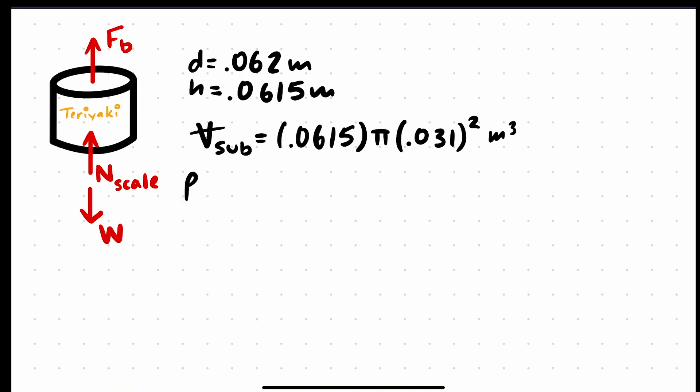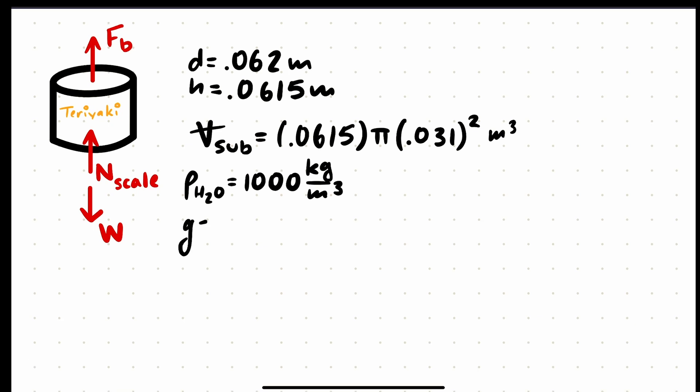First, we have to list our assumptions. We're assuming the density of water to be 1000 kilograms per meter cubed, and the acceleration due to gravity to be 9.81 meters per second squared.